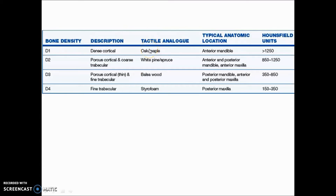Comparing bone density with tactile analogs: in D1 bone the tactile perception is like oak or maple; D2 is like white bean or spruce; D3 is like balsa wood; and D4 is like styrofoam. Location-wise, D1 is in the anterior mandible; D2 in the anterior and posterior mandible and anterior maxilla; D3 in the posterior mandible and anterior and posterior maxilla; D4 in the posterior maxilla.